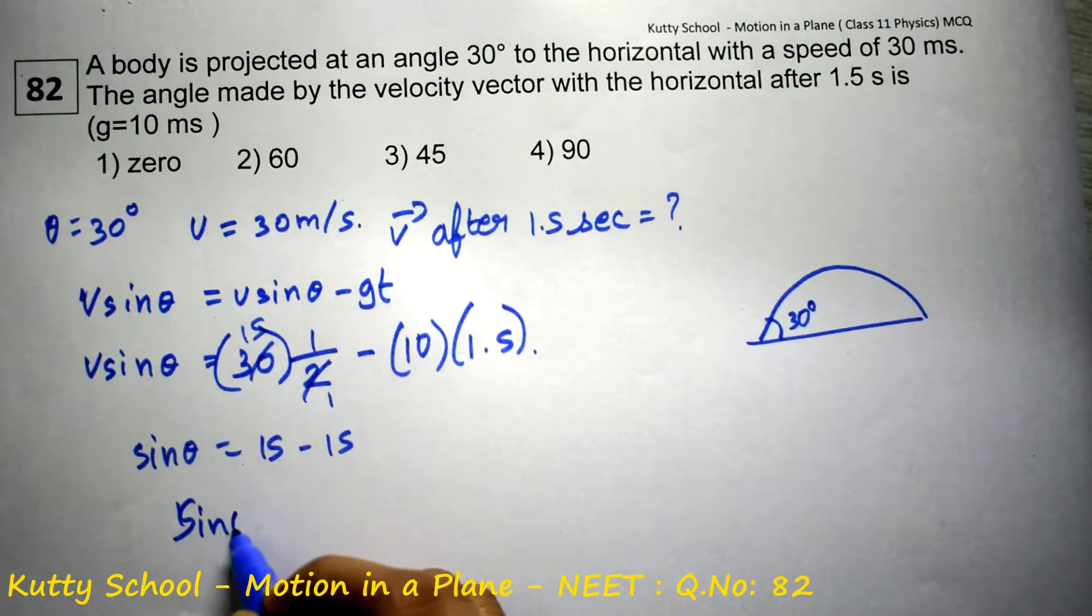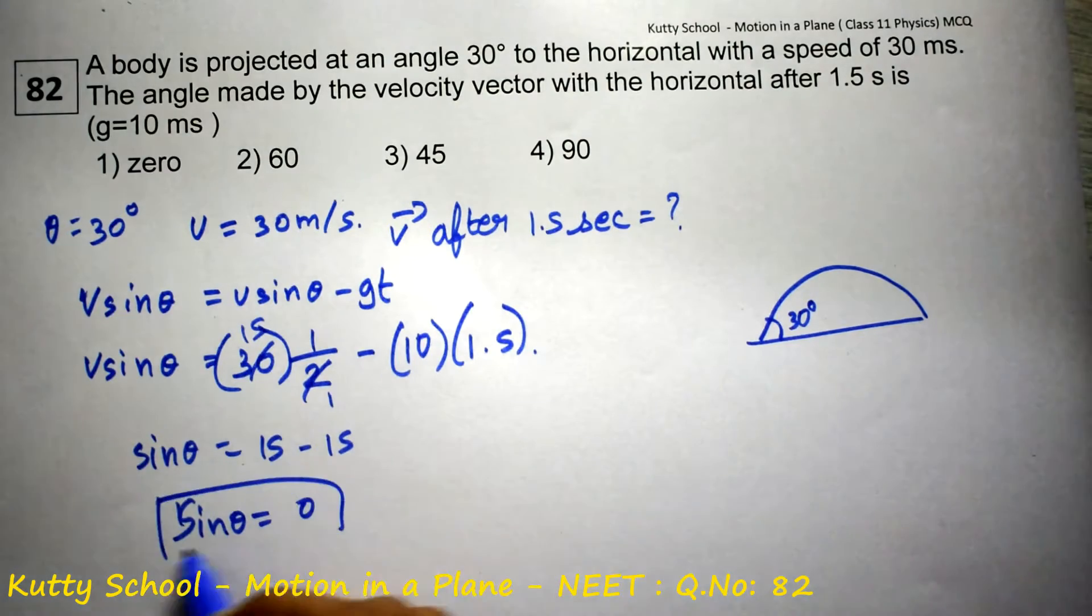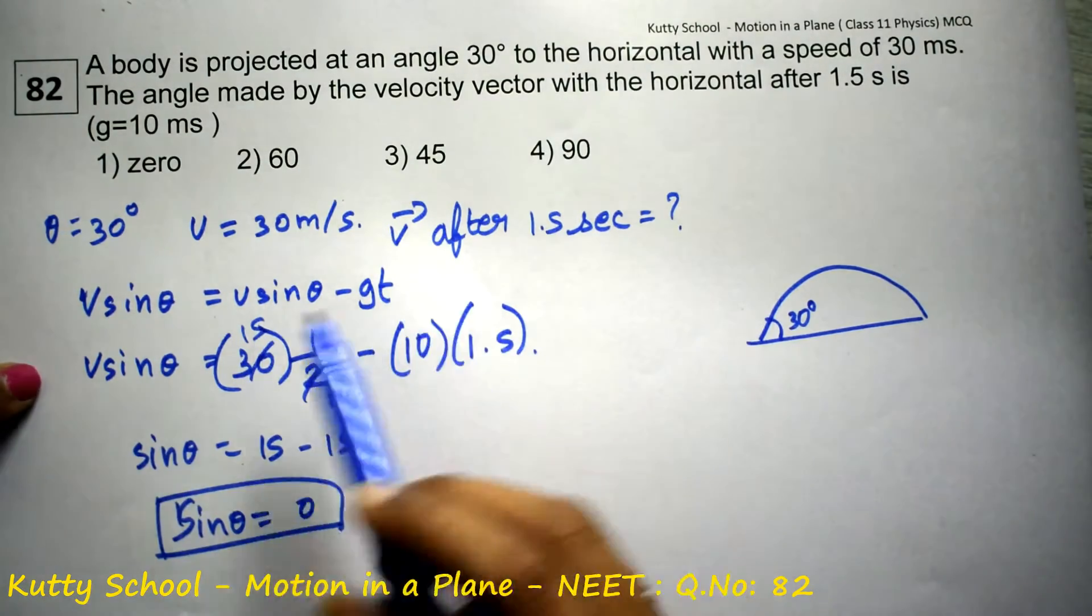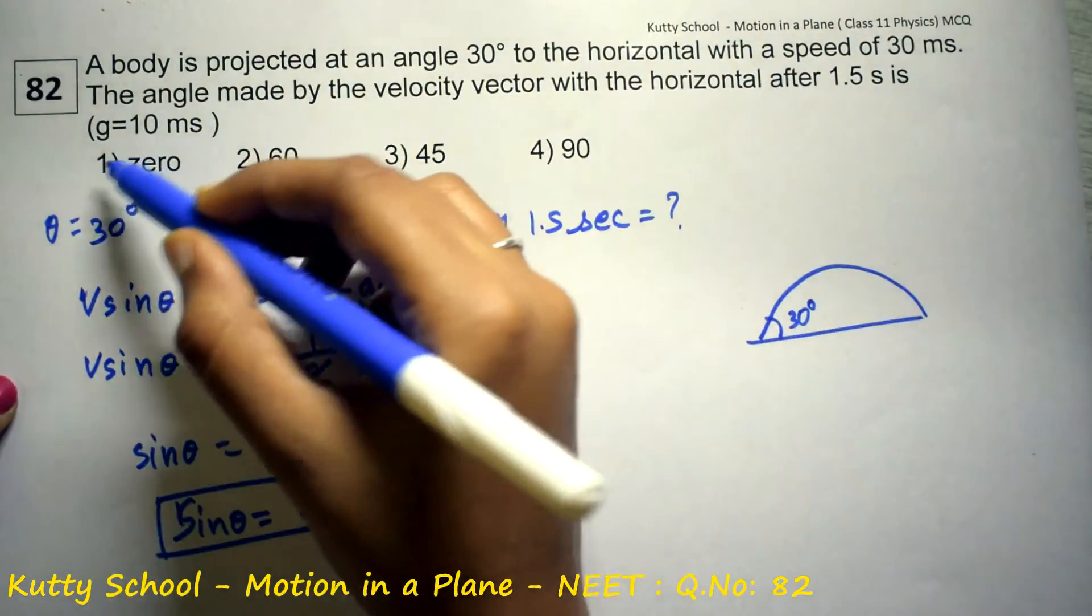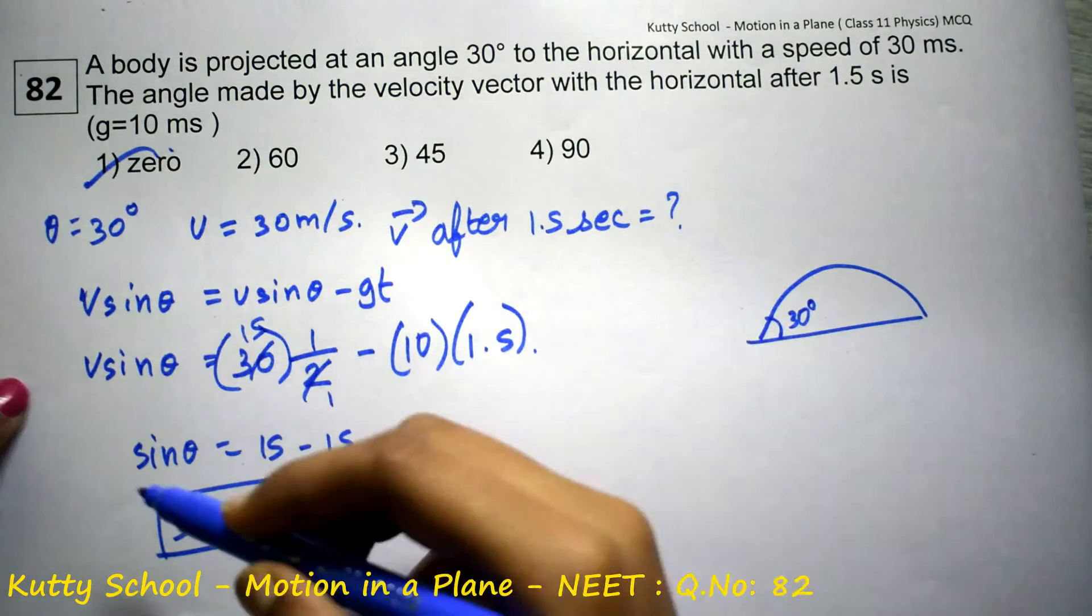So therefore sin theta is equal to 0. So the velocity vector after 1.5 seconds is 0. So the angle at the point is 0.